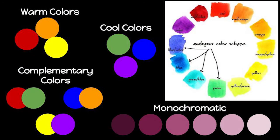Let's take a look at the different color schemes we could use. Warm colors are red, orange, and yellow. The opposite of that is cool colors, which is green, blue, and purple.